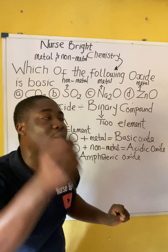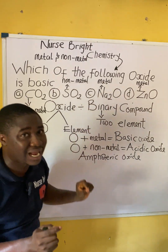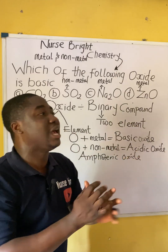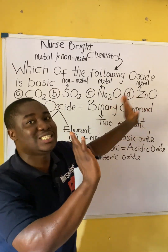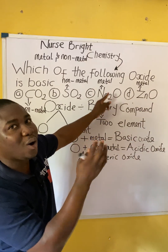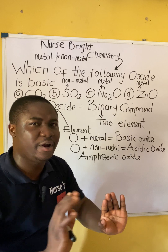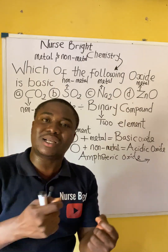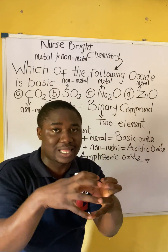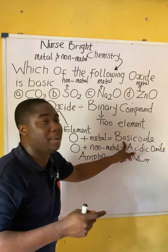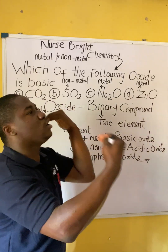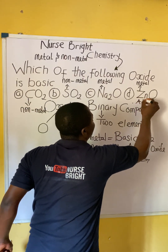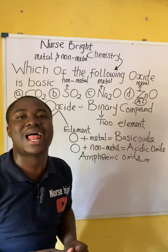What are amphoteric oxides? Amphoteric oxides are oxides that behave like both acid and base — they behave like acidic and basic oxide together. This zinc oxide (ZnO) is called zinc oxide; this is Na2O, sodium oxide; this is carbon(IV) oxide; this is sulfur(IV) oxide. Zinc oxide is an amphoteric oxide. Aluminium also behaves like an amphoteric oxide. Most metals when they combine with oxygen form a basic oxide, but zinc and aluminium are exceptions that behave as amphoteric oxides.